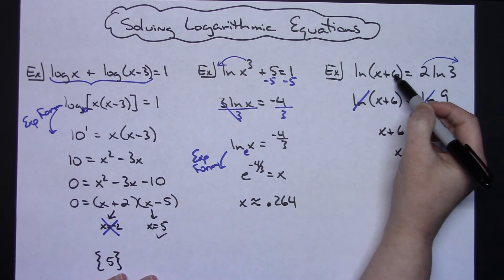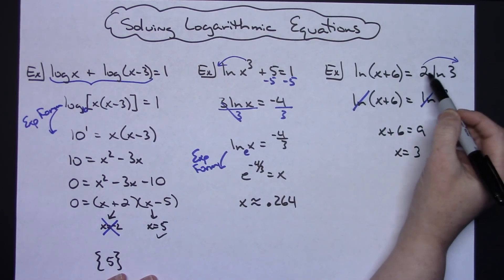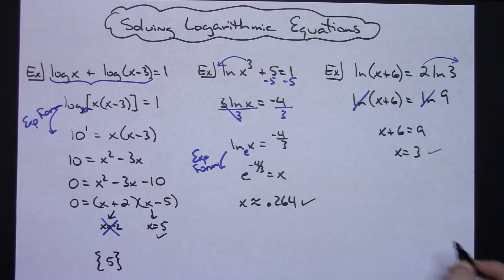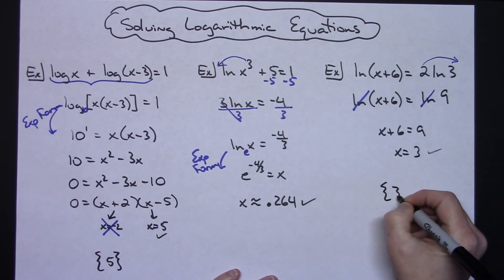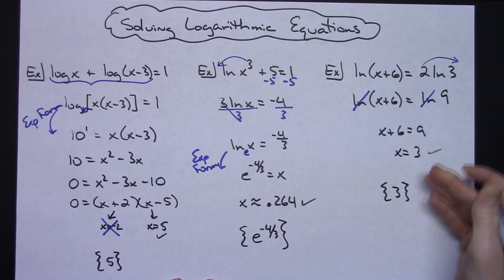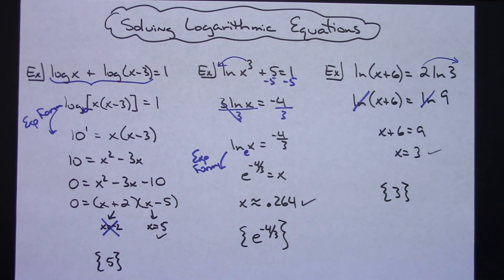Plugging 3 back in, that'd be 6 plus 3 is going to be 9, natural log of 9, and this is natural log 9 once I square it, so again that checks. Solution set here, if you need to write them in solution sets, a lot of people require that. Especially sometimes you might get two or three answers in which case you definitely are going to want to do that solution set form. Thanks for watching and don't forget to subscribe to the channel.